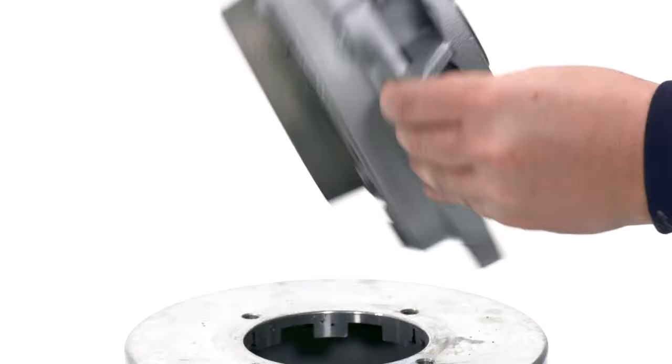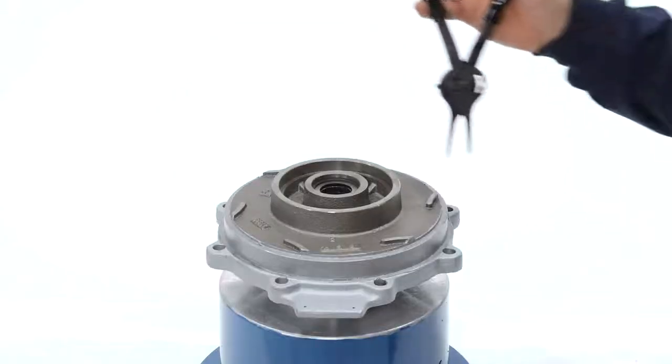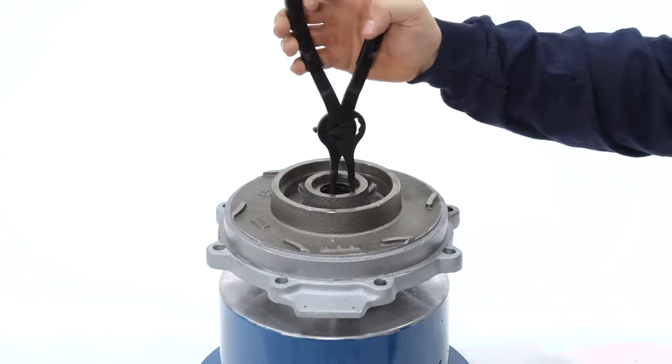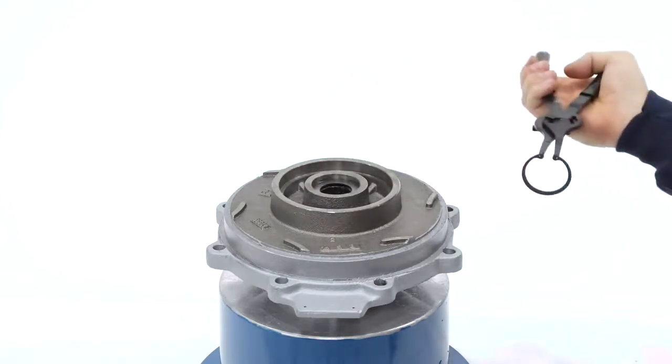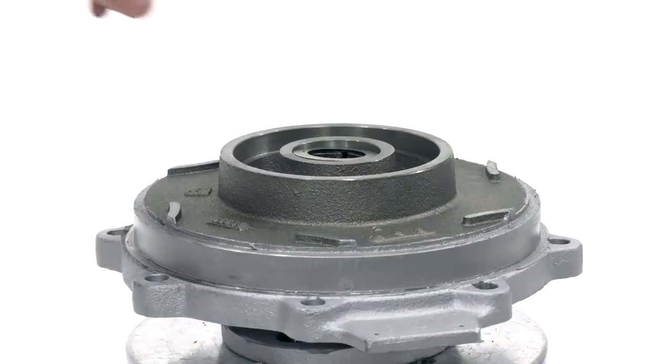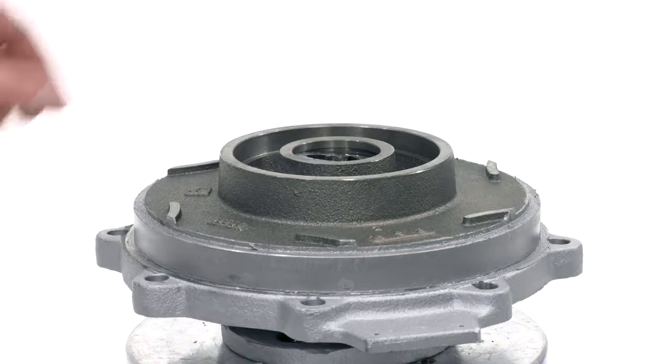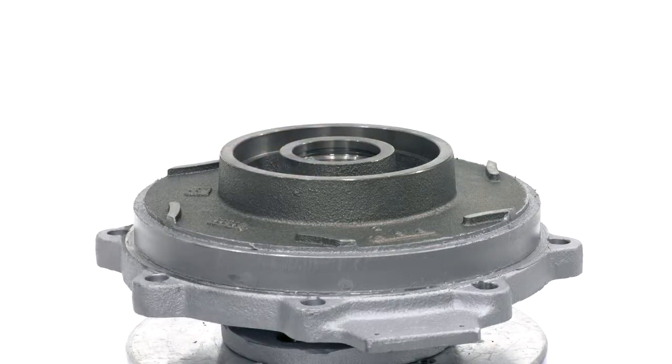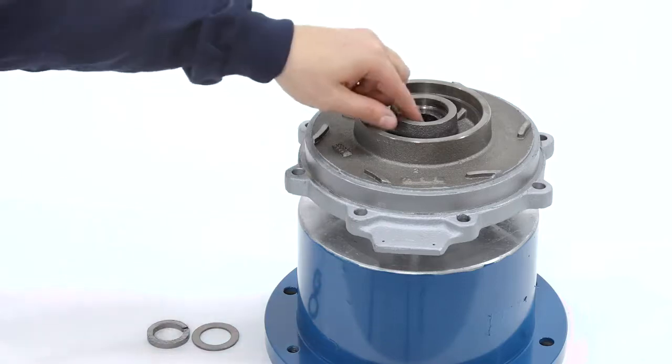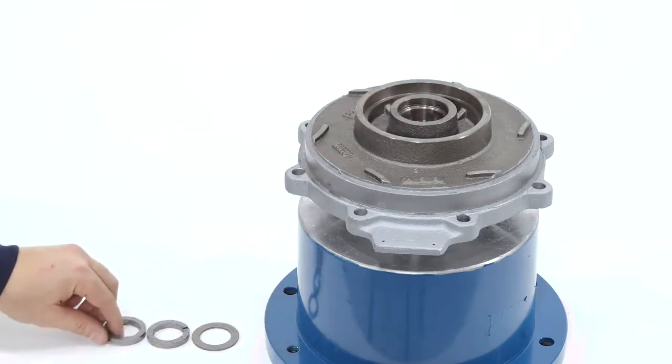Flip the casing cover over on the stand. Use a pair of snap ring pliers to remove the snap ring from the center of the stuffing box. Remove the spacer, followed by the packing. The casing cover is now fully disassembled.